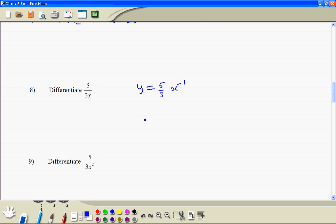Now, you differentiate. So dy/dx, multiply this fraction by minus 1, then you reduce the power by 1, so minus 2. That's the answer, which you can write as minus 5 divided by 3x squared.